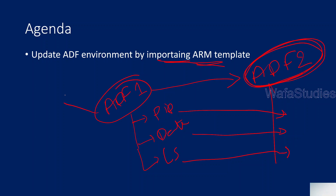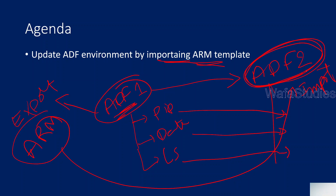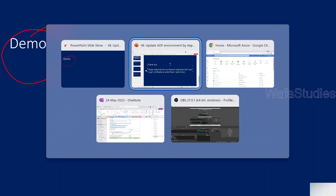There is something called the ARM template import option - using that you can easily do that. From Data Factory 1 you need to export the ARM template first, then import that ARM template into ADF2. Once you do that, automatically from ADF1 whatever resources you have - pipelines, datasets, linked services - everything will come into Data Factory 2 as well. Let me practically show you a demo.